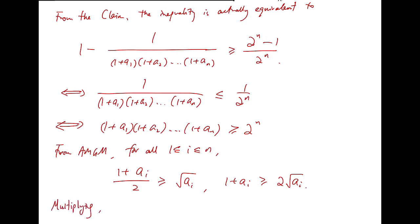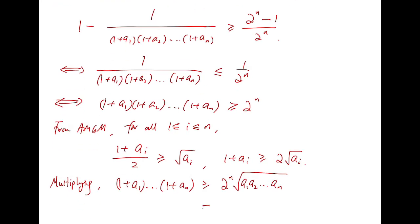Multiplying, we will have the left hand side, the product will be greater than or equal to 2 to the n times the square root of a1 times a2 all the way up to an. And this will be exactly 2 to the n, because, as given in the condition, the product of these n positive real numbers is 1. And so, we have the desired inequality.